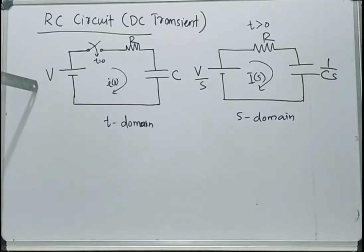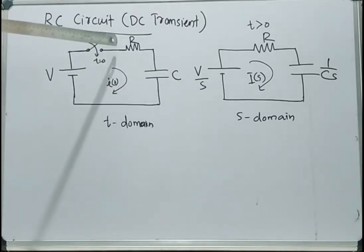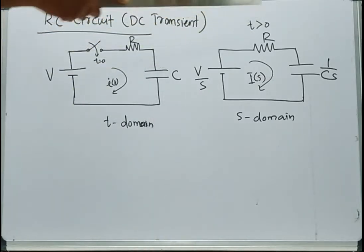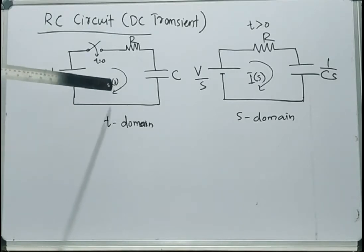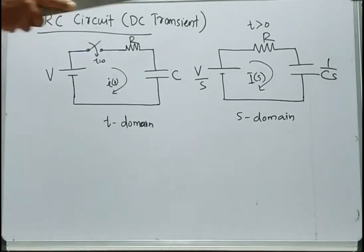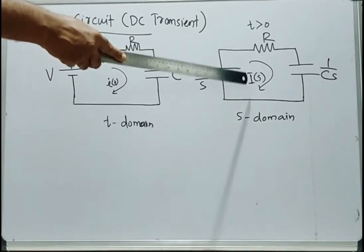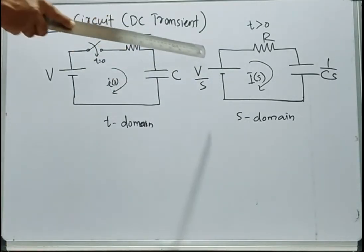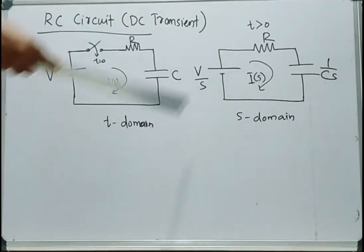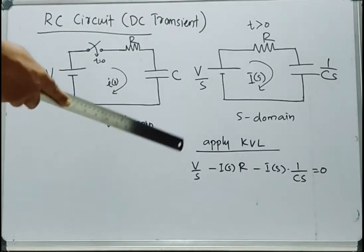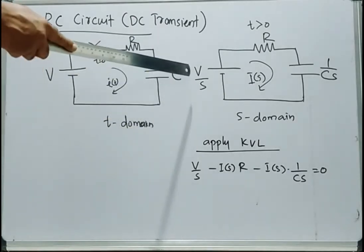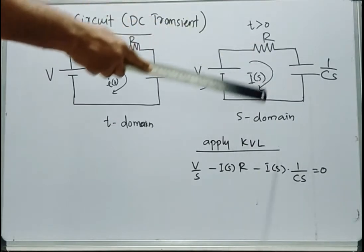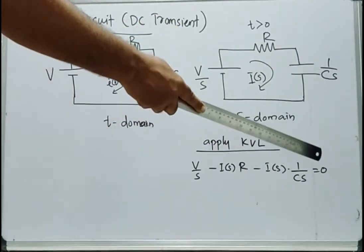So V becomes V/S. R has no change. The impedance form of capacitor in S domain is 1/CS, and this current I(T) becomes I(S). This is the equivalent circuit in S domain corresponding to the time domain circuit. Now we need to apply KVL over this loop. Applying KVL, we can obtain this voltage equation: V/S minus I(S) times R minus I(S) times 1/CS is equal to zero.